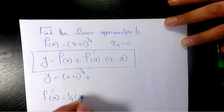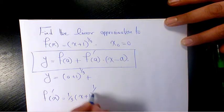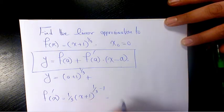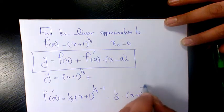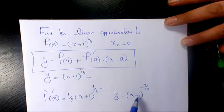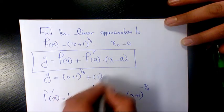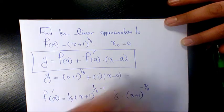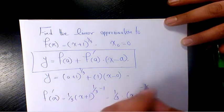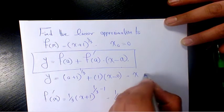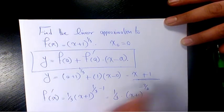When you substitute zero here, f'(0) is going to be 1/3. (x - 0) is just x, so we have 1 + (1/3)x.